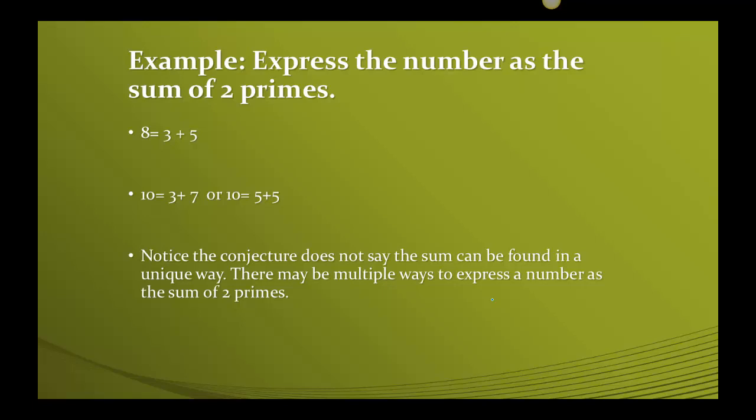Let's look at some examples of it. What we want to do is go back and pick an even number. Let's say we pick 8, and we just want to express it as the sum of two primes. So easy enough, 8 is 3 and 5. Let's pick another number, so let's pick 10. Do you see we could do this in more than one way? We could say 10 could be 3 and 7, or 10 could also be 5 and 5. So the conjecture never said that this had to be done in a unique way. There may be multiple ways of expressing the number as the sum of two primes. That's absolutely fine.